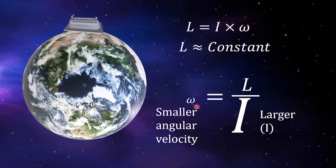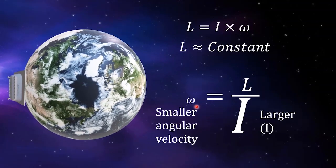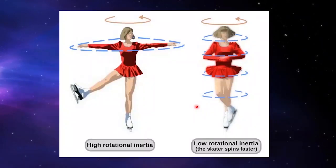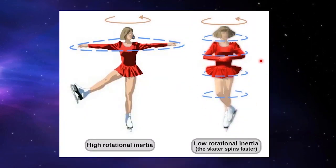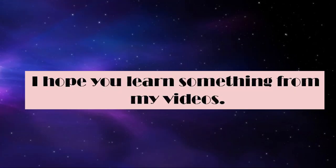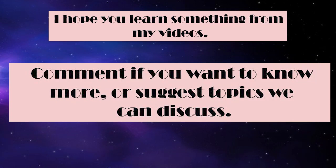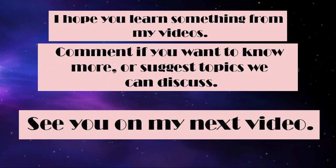This is the same idea as the figure skater. The figure skater on the right is spinning faster, but when she extends her limbs outward, she rotates slower. Extending her limbs moves mass away from the center of rotation, resulting in a larger value of moment of inertia, thus slowing her down. I hope you learned something in this video — comment if you want to know more or have suggestions. See you in my next video!